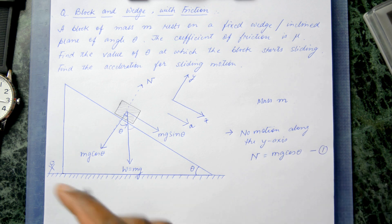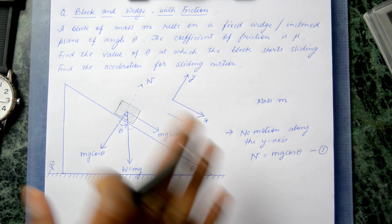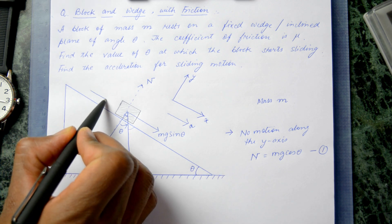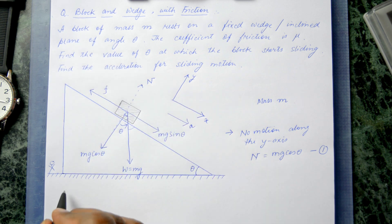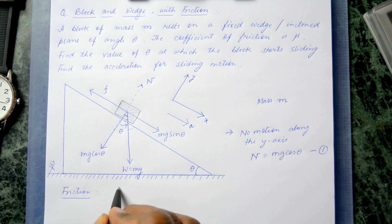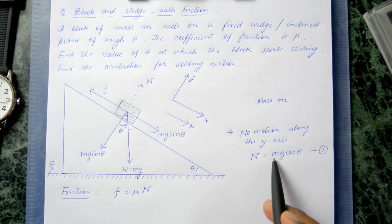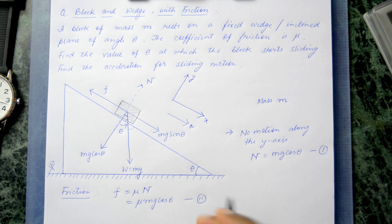There is another force involved: friction. Friction always acts in a direction opposite to motion, so if motion is happening down the incline, friction acts up the incline. Friction is defined as f = μN, and since N = mg cosθ, we get f = μmg cosθ. This is equation number two.